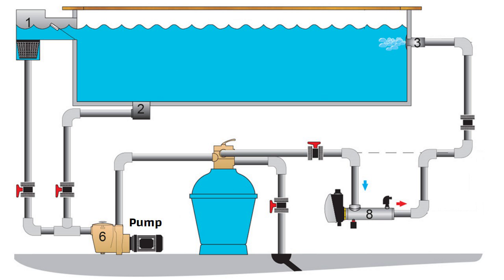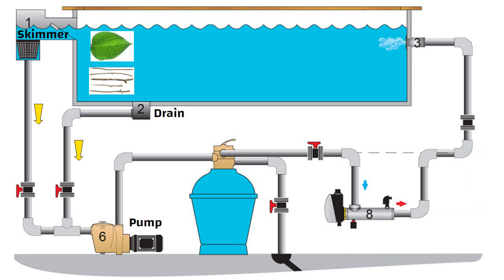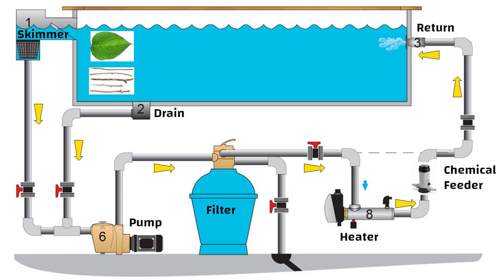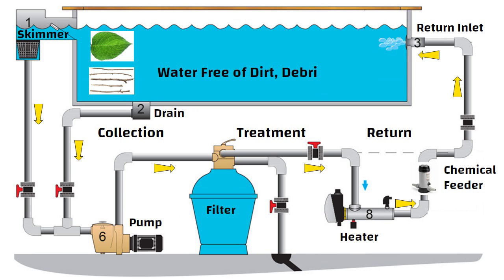Hello friends. The pump sucks water from the pool through skimmers and drains. Things such as leaves or twigs are retained here. After this, water passes through a filter and gets filtered. Then it passes through a heater and gets heated. Then water passes through a chemical feeder where it is chemically treated, and again goes into the pool through return inlets. This system of collection, treatment, and return of pool water is repeated over and over to ensure the water is free from dirt, debris, and bacteria. Now let us understand all the components of a swimming pool one by one in detail.